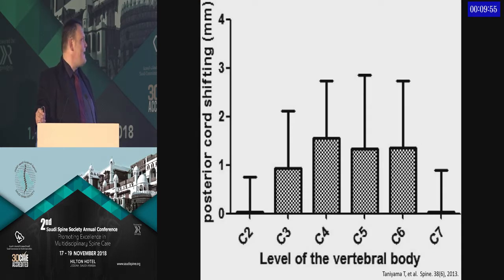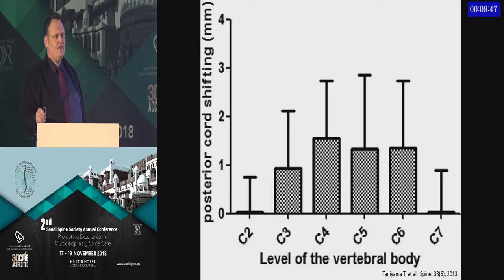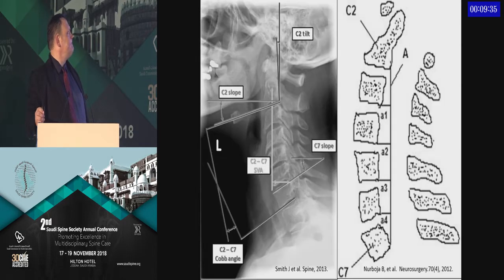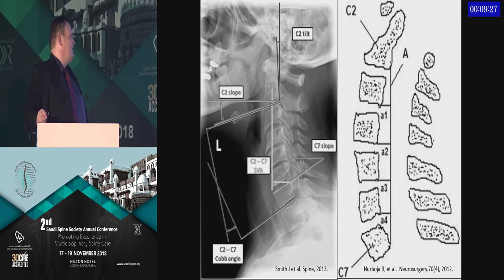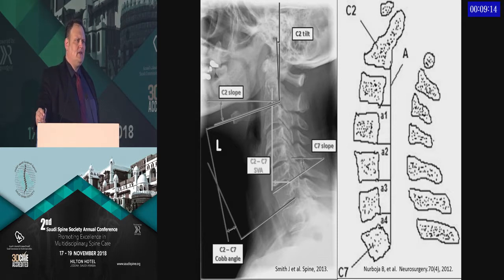But how much cord drift can you expect? Some studies show up to three millimeters, but often less than two millimeters of drift, and that cord drift decreases as you lose lordosis. It also decreases as you go cranial and caudal from the apex of cervical lordosis. Alignment can be assessed using sagittal vertical axis, C7 slope, Cobb angle, or Ishihara's index, which takes longer to calculate but gives a clearer sense of the degree of lordosis — especially useful in patients with a non-homogenous pattern of lordosis.